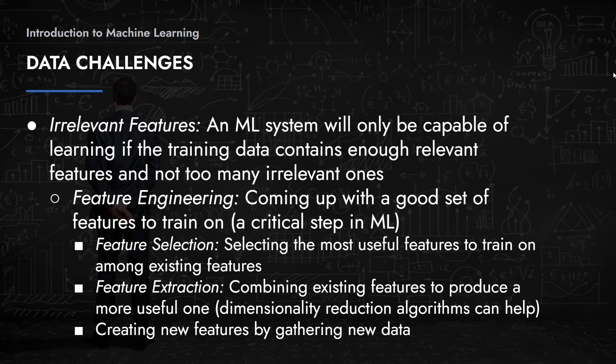Feature engineering involves feature selection, which is selecting the most useful features to train on among existing features, and feature extraction, which is combining existing features to produce a more useful one. Dimensionality reduction algorithms can help with this, as well as creating new features by gathering new data.